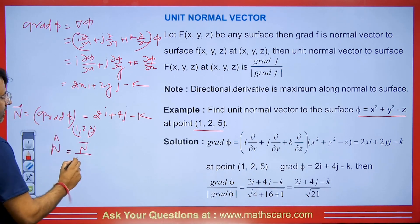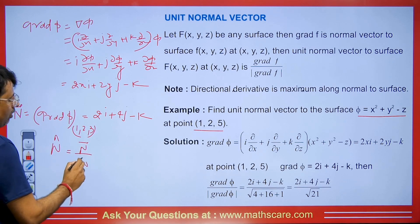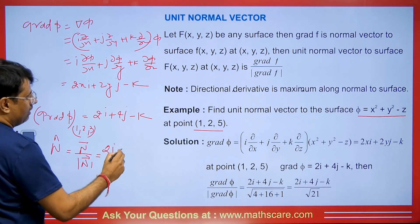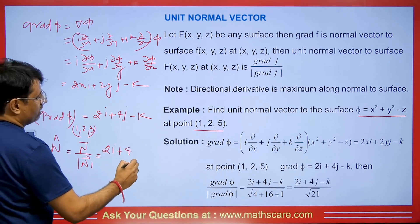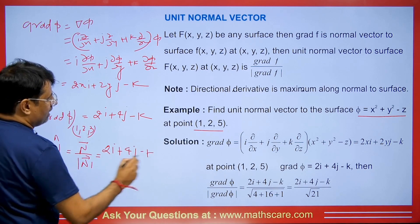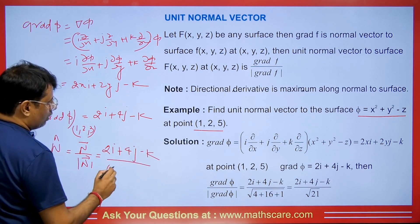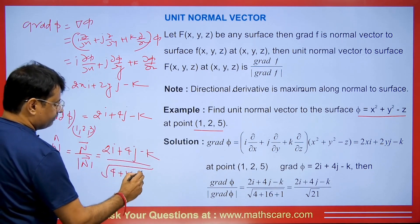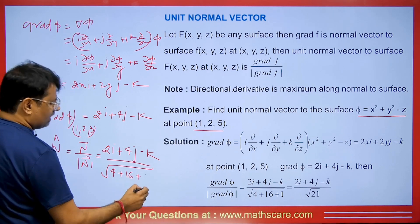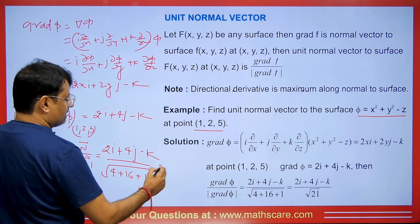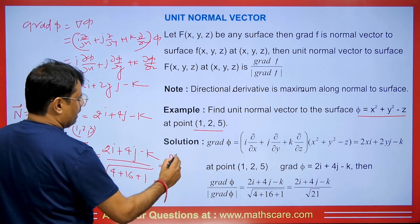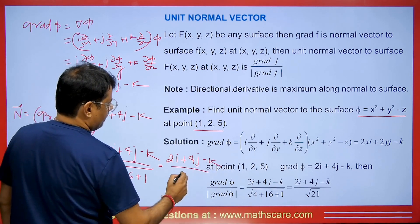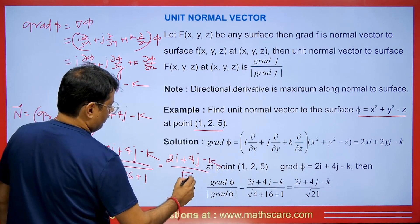Now we need to find its unit normal vector, which is n vector divided by mod of n vector. As a result, we will have (2i + 4j − k) divided by the square root of (4 + 16 + 1), which gives (2i + 4j − k) divided by root 21.